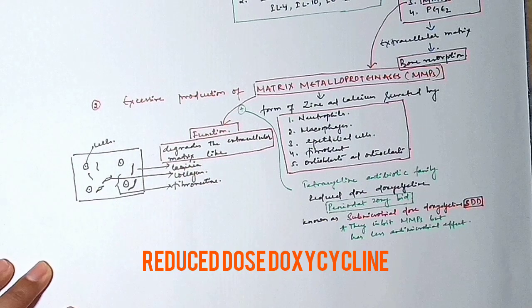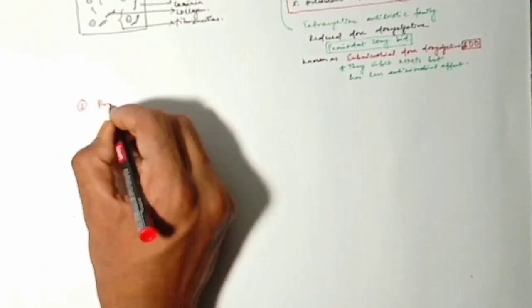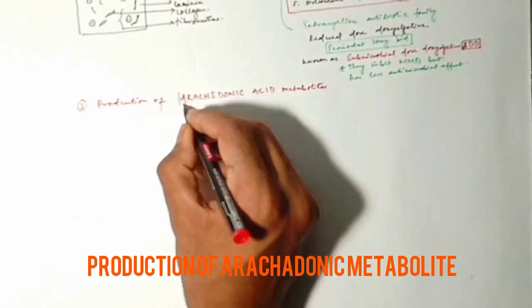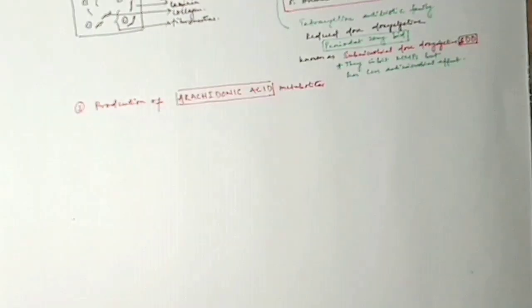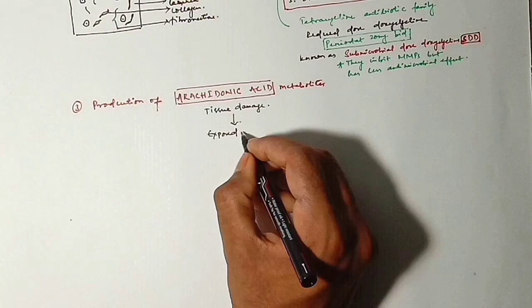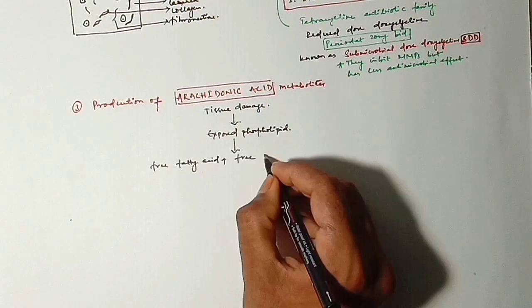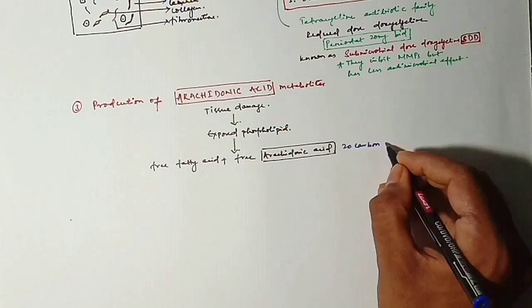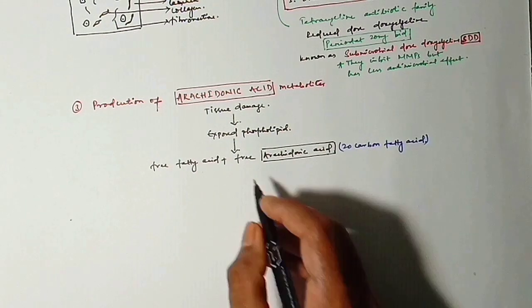Here comes the third point, that is production of arachidonic acid metabolites. How does it come, where does it come from? Tissue damage occurs, they will expose the phospholipids that will give free fatty acids and free arachidonic acids. Arachidonic acids mainly 20 carbon fatty acid. They will get metabolized in two ways.